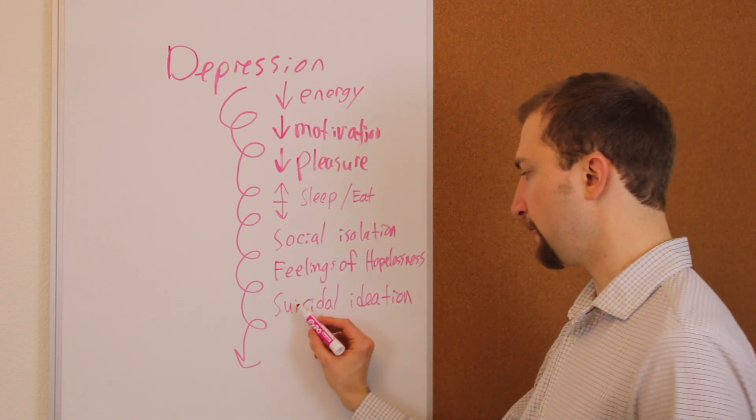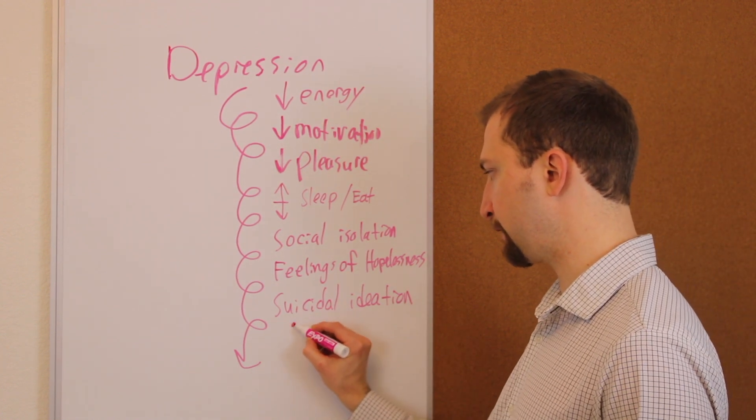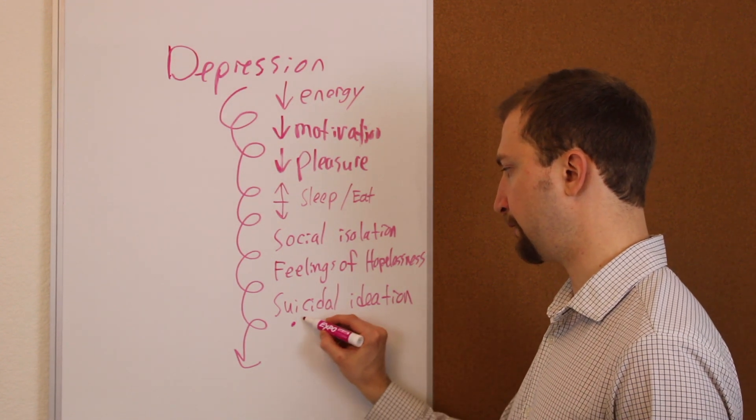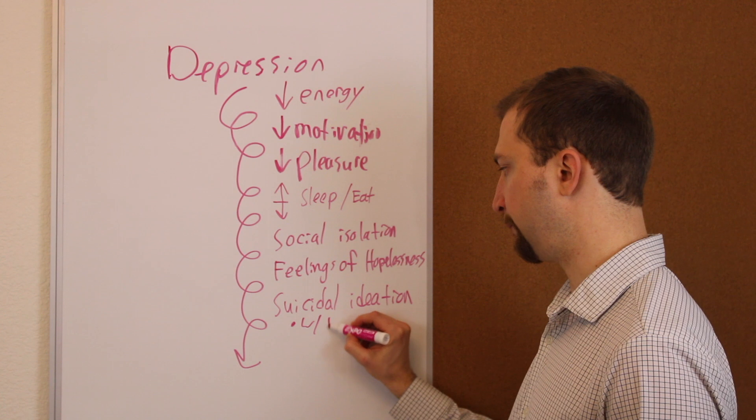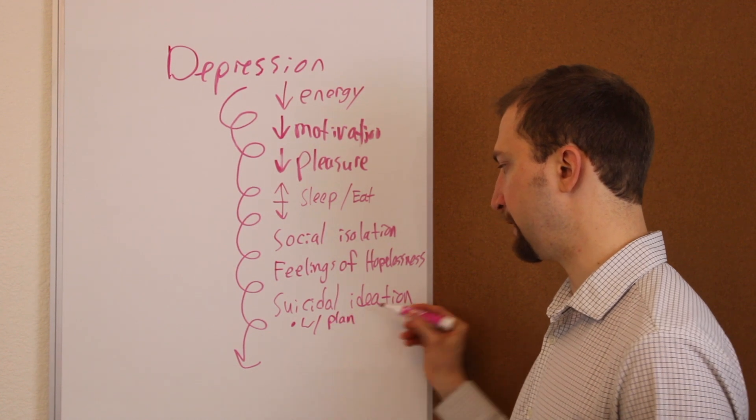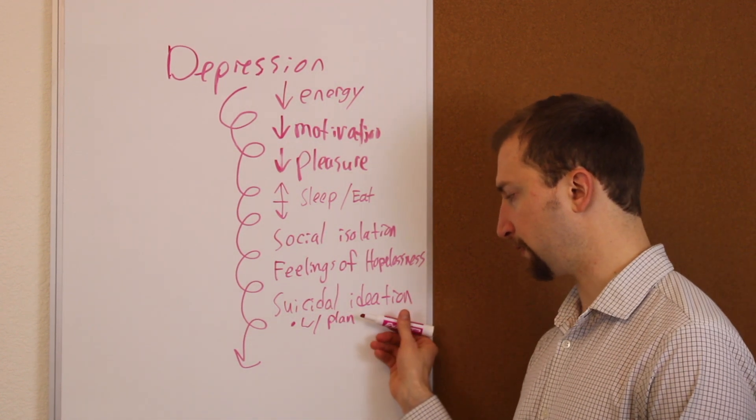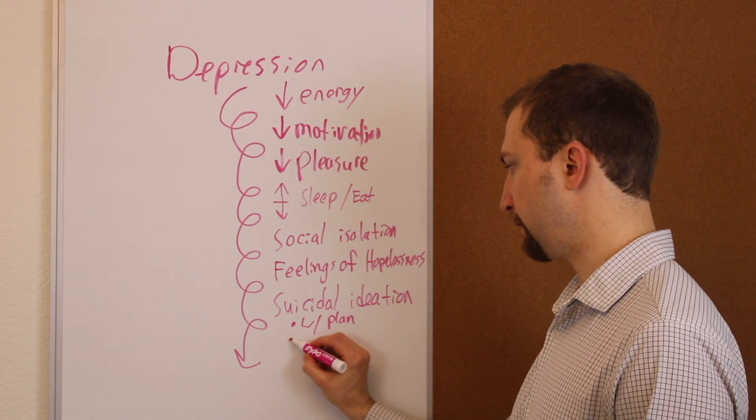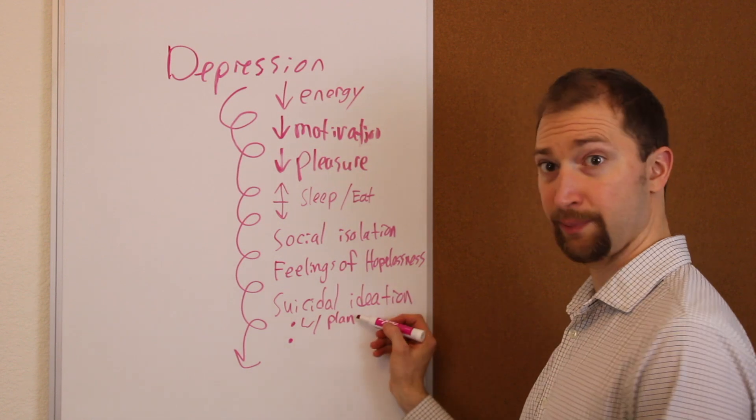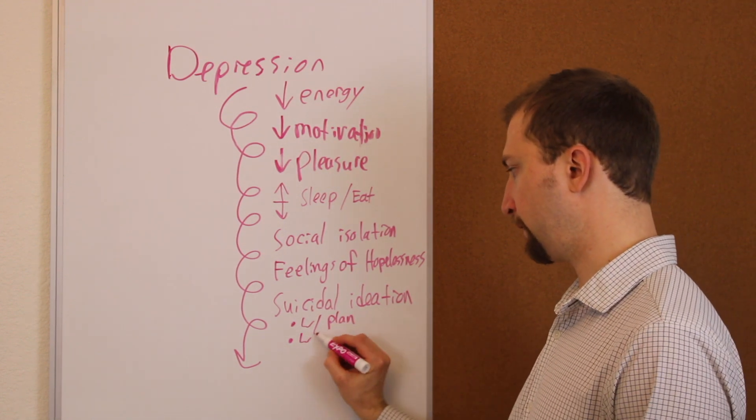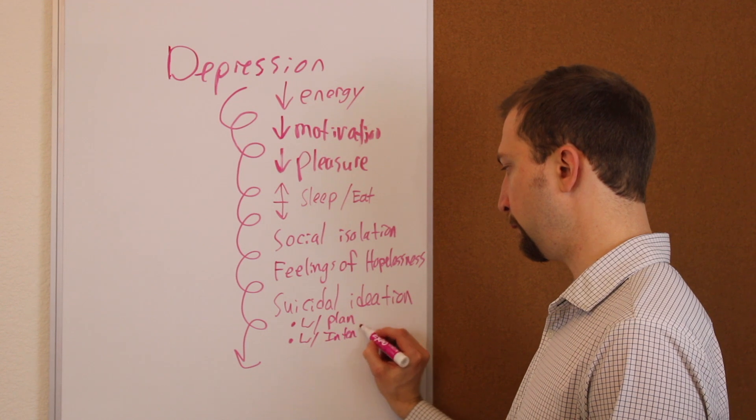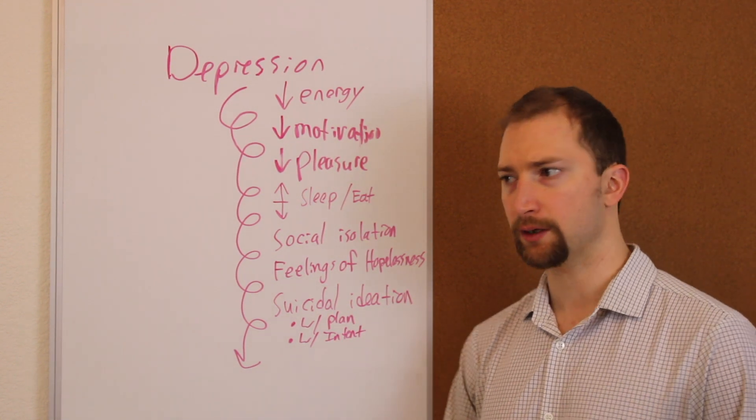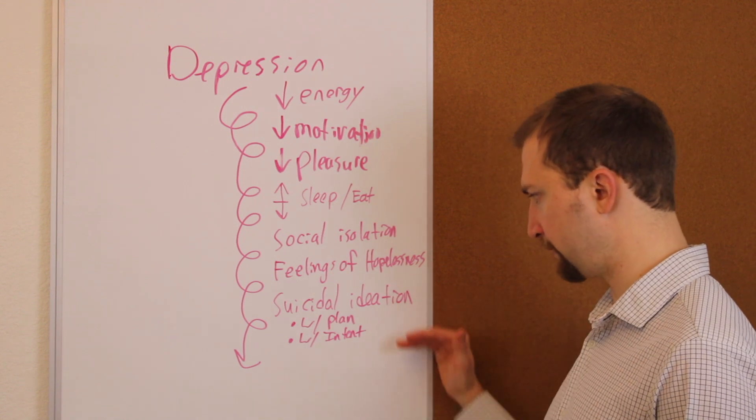Now there's levels of suicide. So there's suicidal ideation just alone. Then there's suicidal ideation with a plan, meaning we've identified our method of self-harm or a suicide attempt. And then there's suicidal ideation with an intent to exercise that plan, to follow through with that plan. It usually goes in that order.